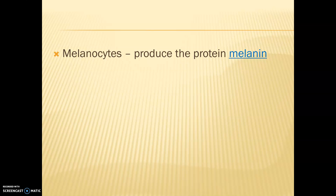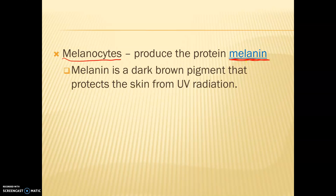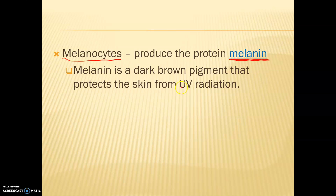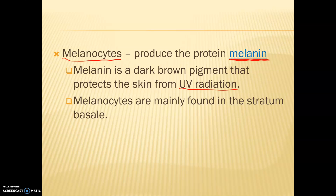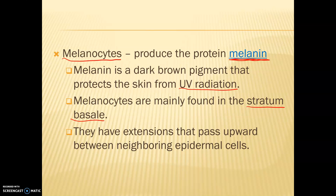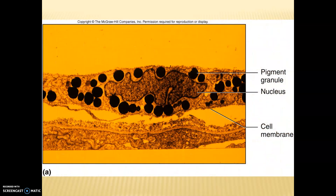Another thing found in our epidermis is melanocytes. Melanocytes are cells that produce a protein called melanin, and this melanin gives our skin its color. Melanin is a dark brown pigment that protects our skin from UV radiation. This is why we get tanner in the summer — because there's more UV radiation, so we need to produce more melanin for protection. Melanocytes are primarily found in our stratum basale, the bottom layer of the epidermis, and they have extensions that go upward in between neighboring epidermal cells.